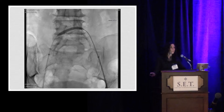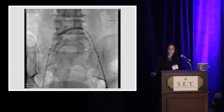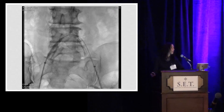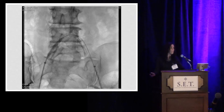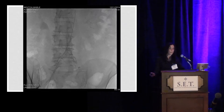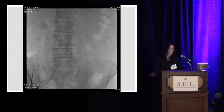We chose to use a wire and snare technique — coming over from the left to the right — to gain through-and-through access, and then utilized a six millimeter balloon to angioplasty through the bilateral common iliacs and across the bifurcation in order to open up any fenestrations and provide improved access.